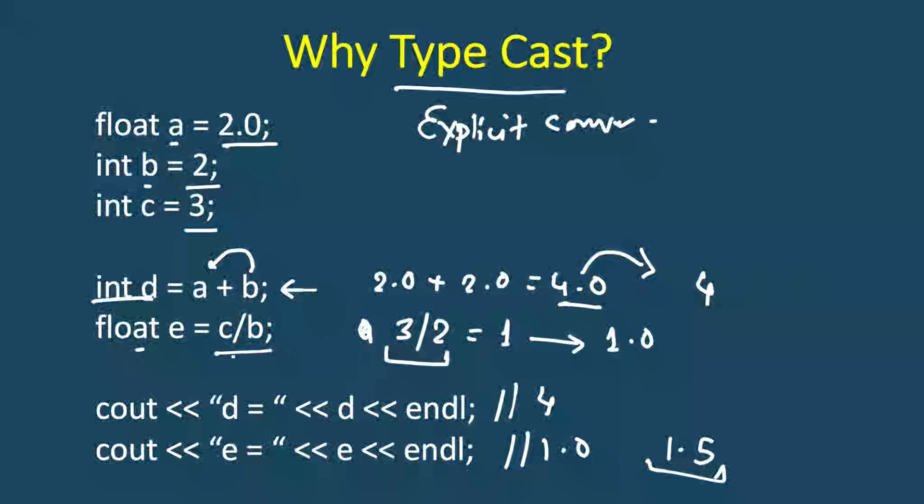So here the compiler did implicit conversion while assigning the result to the float variable, but that was not enough. We need to do that beforehand. So if we had manually converted it to float one of the variables, doesn't matter whether c or b, then the result would have been calculated in float only.